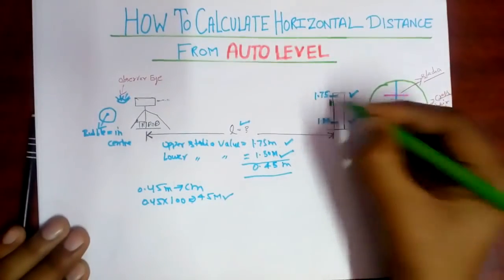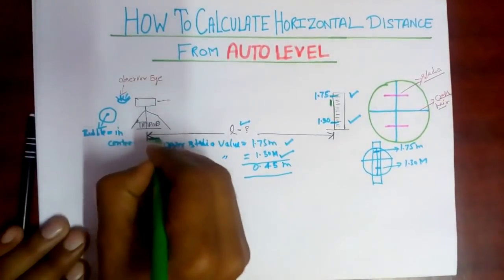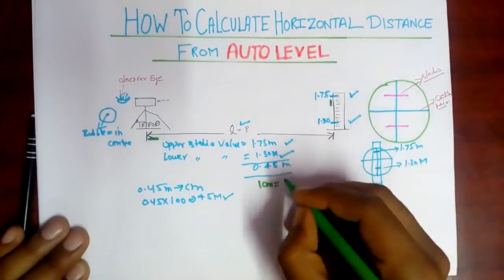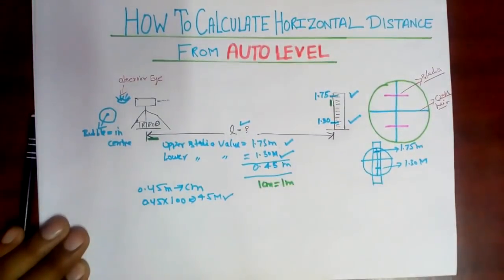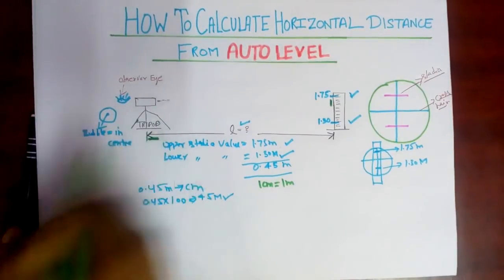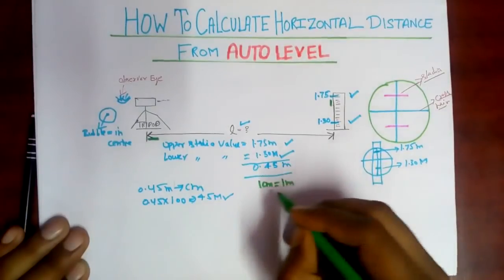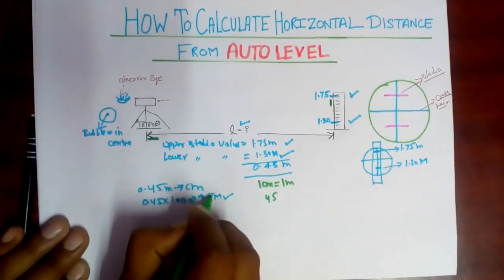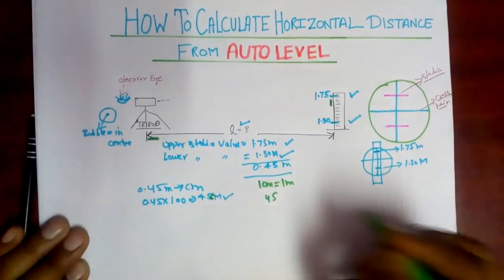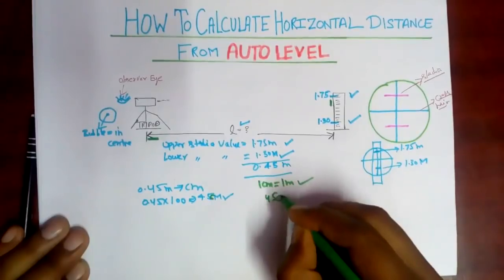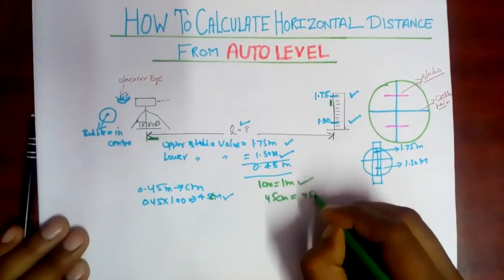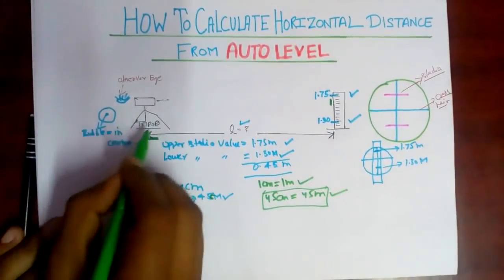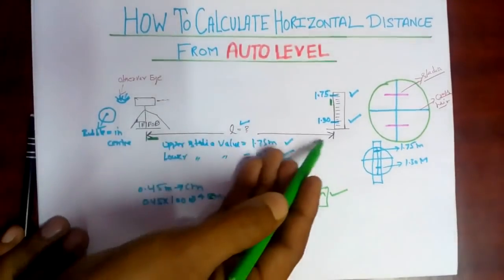In the staff readings, one centimeter on the staff is equal to one meter in distance — you have to follow this rule: one centimeter on the staff is equal to one meter in horizontal distance. So 45 centimeters on the staff means the distance is 45 meters.